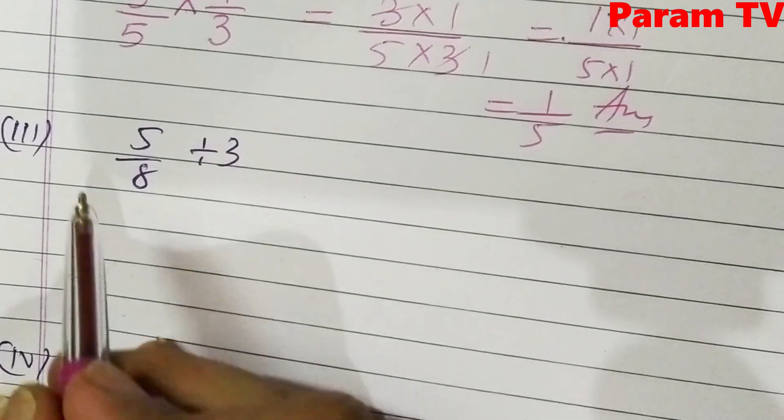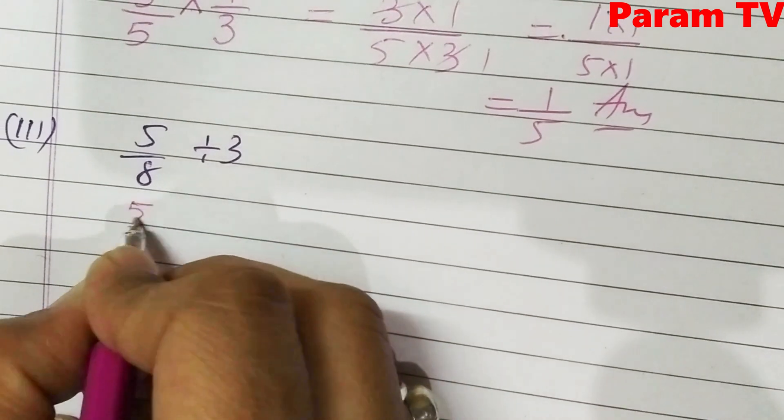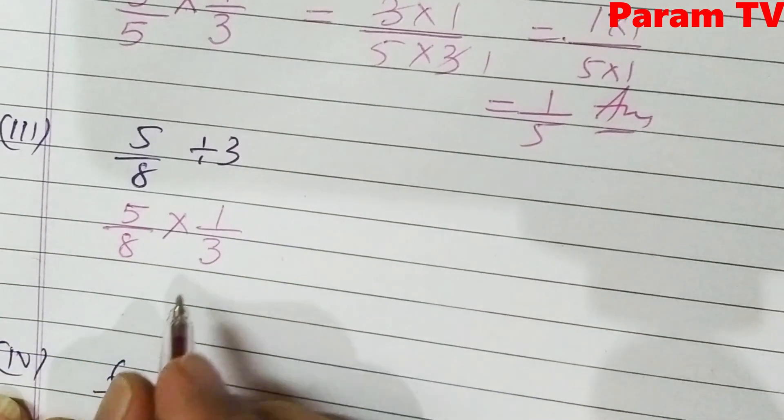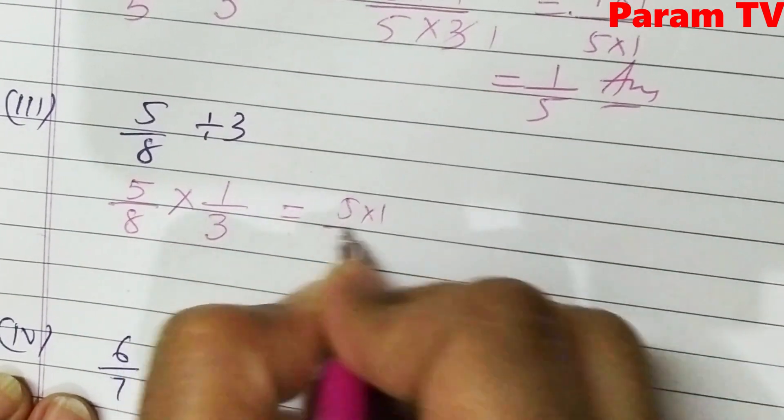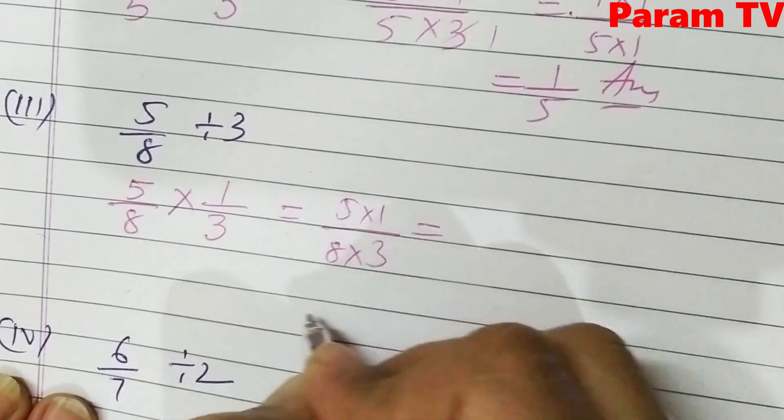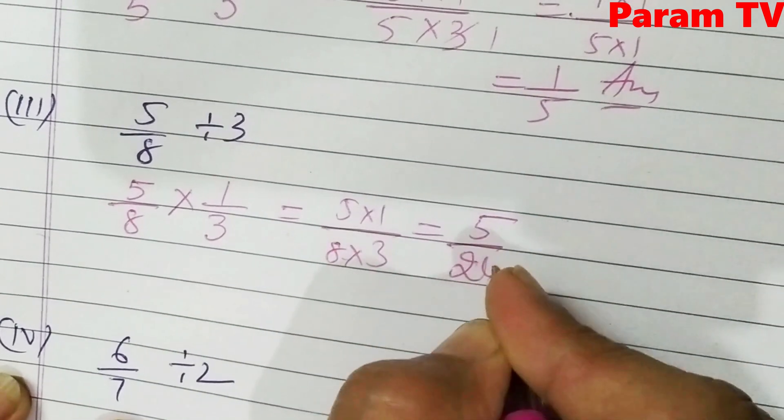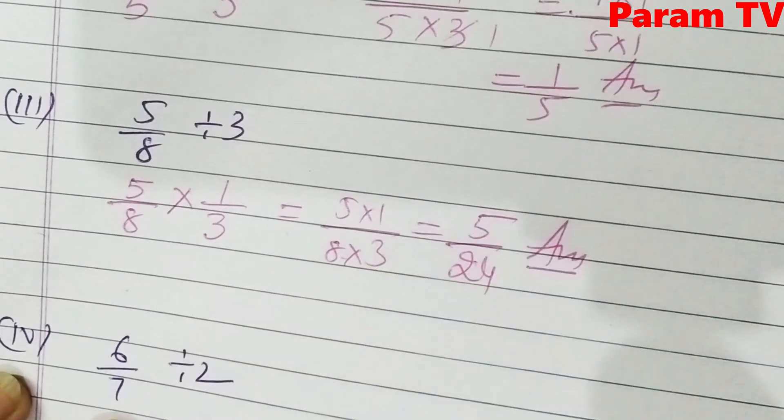Next is 5 by 8 divided by 3. Same. 5 by 8 multiply 1 by 3. Reciprocal. Now here, 5 into 1, 8 into 3. This is the answer.